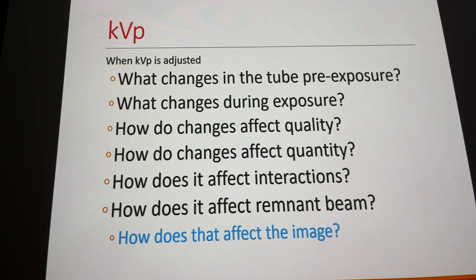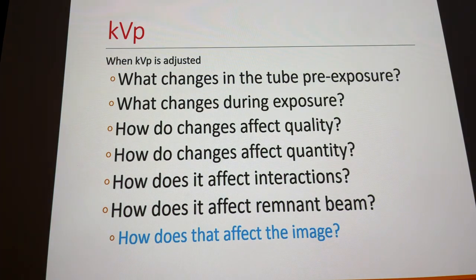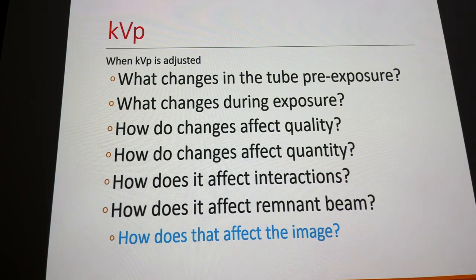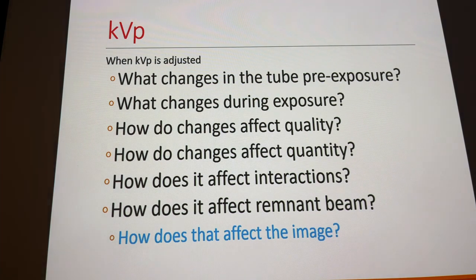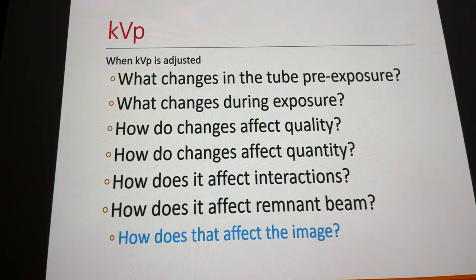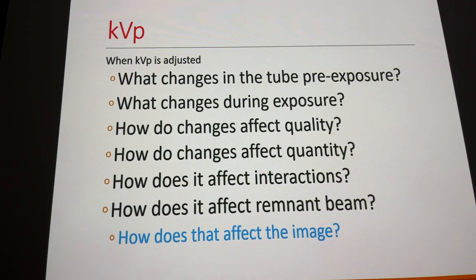The interaction on the image receptor changes significantly. The image is a computer-manipulated image — not AI — and the computer processes out overexposure, so it becomes more a professional responsibility to select the right technique and KVP than an issue with visible image quality.